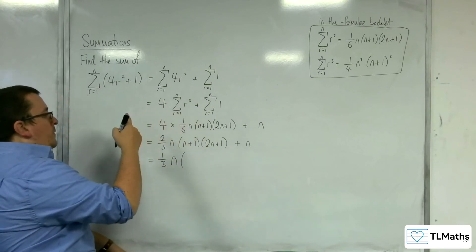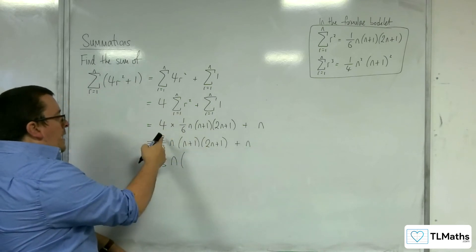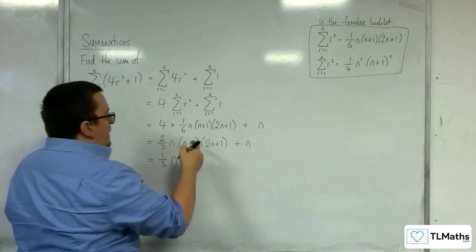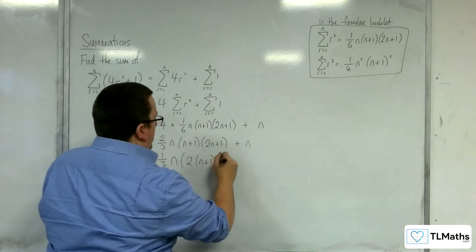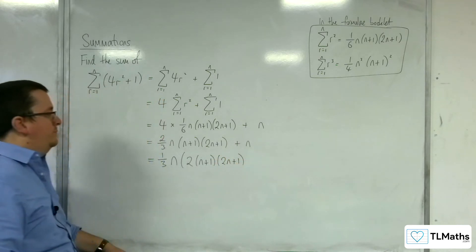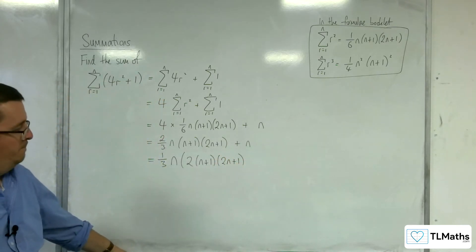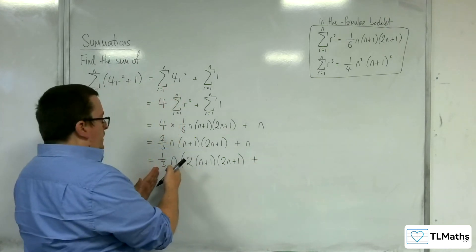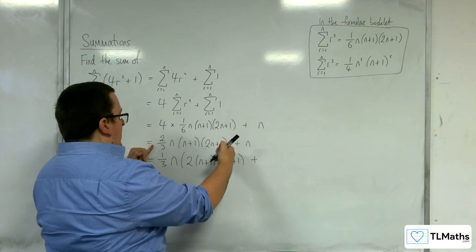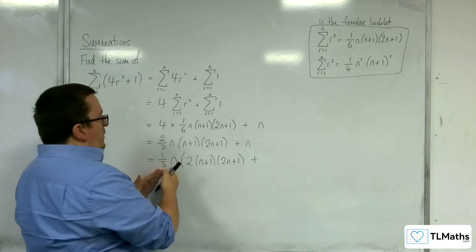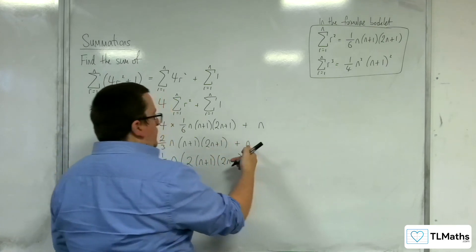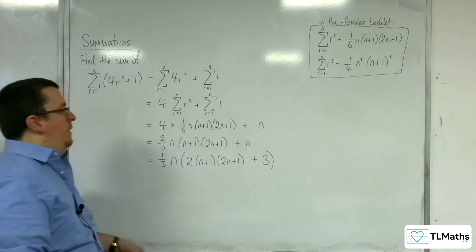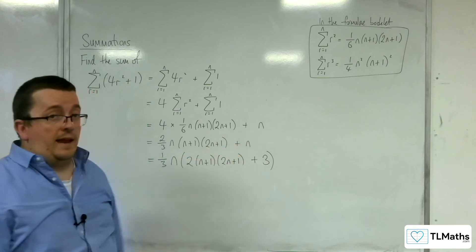So I've got the 2 from that. I've got the n plus 1. I've got the 2n plus 1. So that times that will make that. 1 third n times what will make n? Well, it would just be 3. So 1 third n times 3 will make the n.